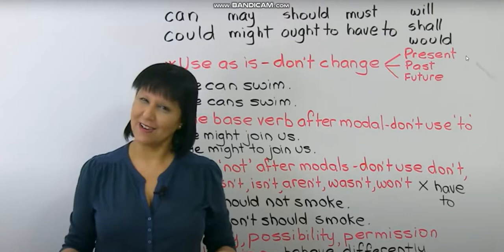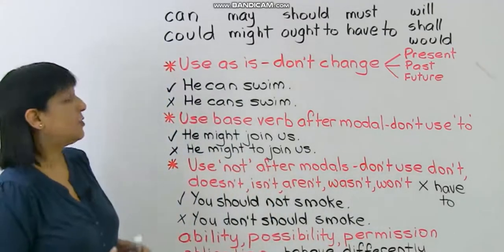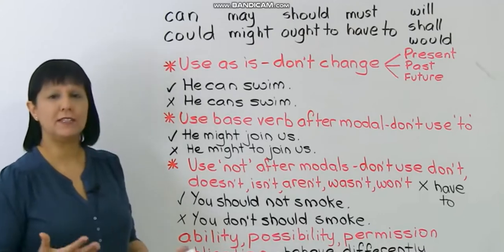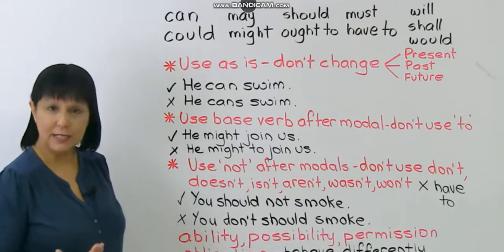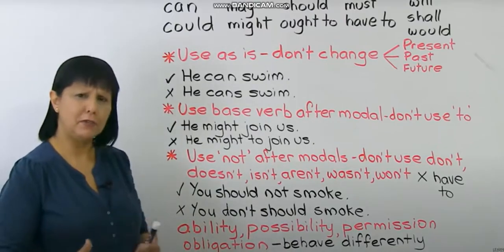We'll see various examples where these modal verbs are used, and we'll see how we can use them correctly — we'll understand it in a much easier way. As we always do, we watch the video and I go on explaining to make it simpler and easier. Modal verbs are words that express different kinds of things — for example, they might express ability, possibility, permission, obligation, and some other things like that.